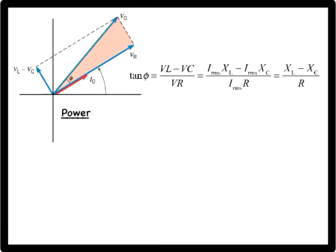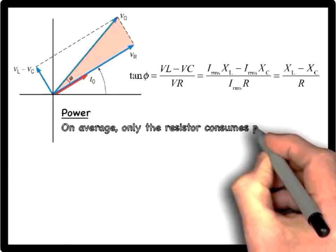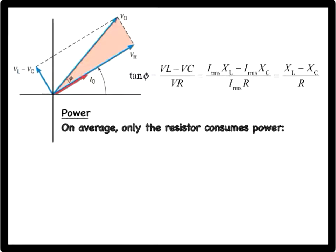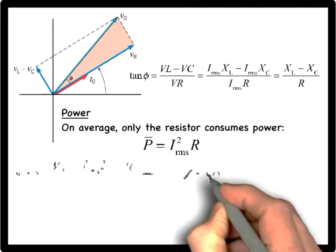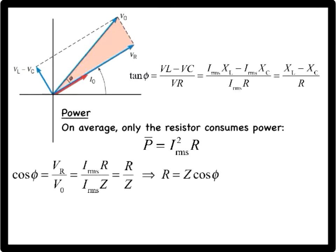The phase angle is important because it has a major effect on the average power delivered to the circuit. Recall that on average, only the resistor consumes power, which is given by P average equals IRMS squared times R. Looking at the phasor figure, the cosine of the phase angle is given by the adjacent side over the hypotenuse, or VR over V0, which is equivalent to the following.